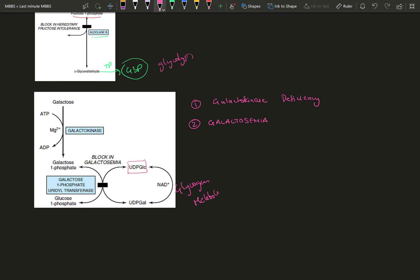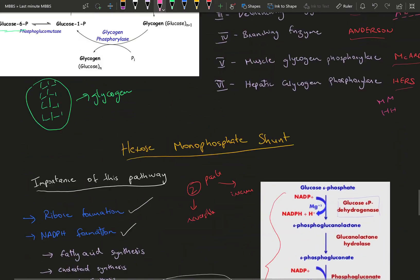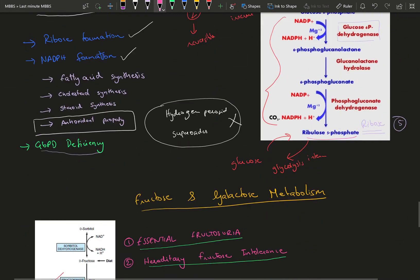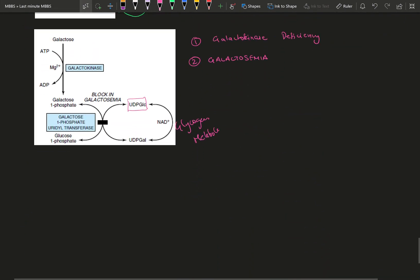I will show you this same thing in glycogen metabolism right here. So here it is. UDP glucose and UDP galactose are interchangeable.